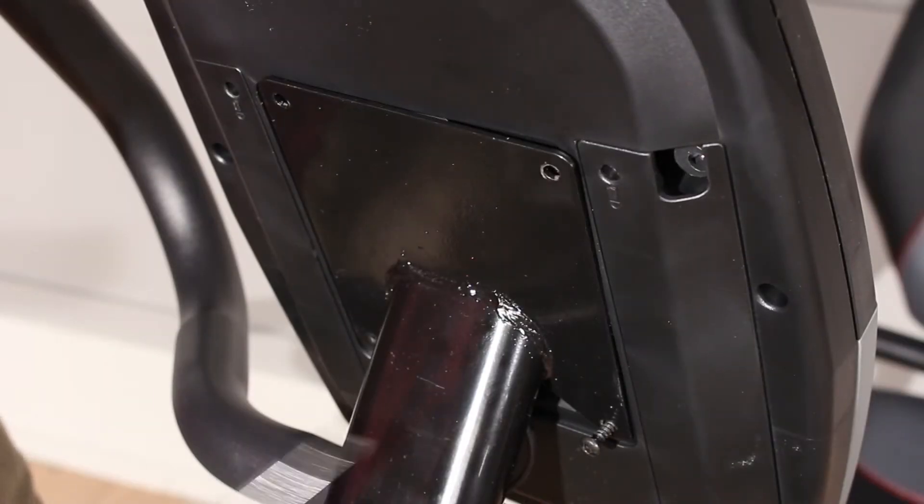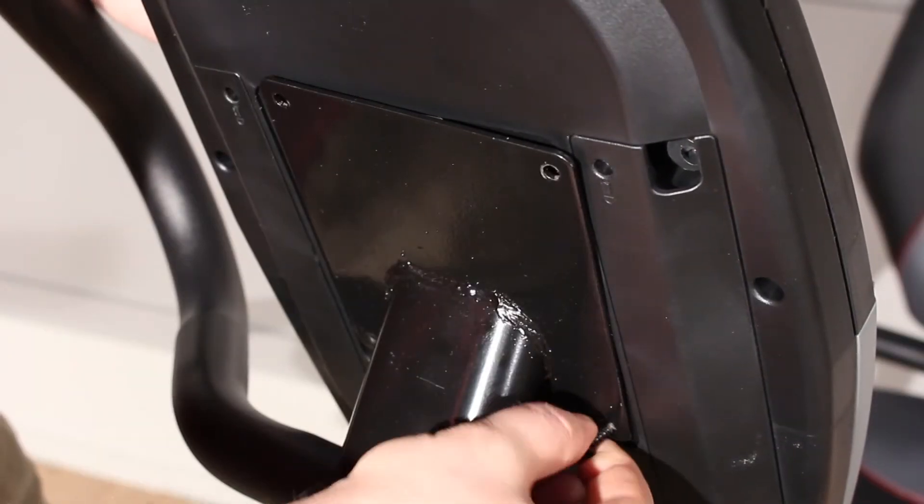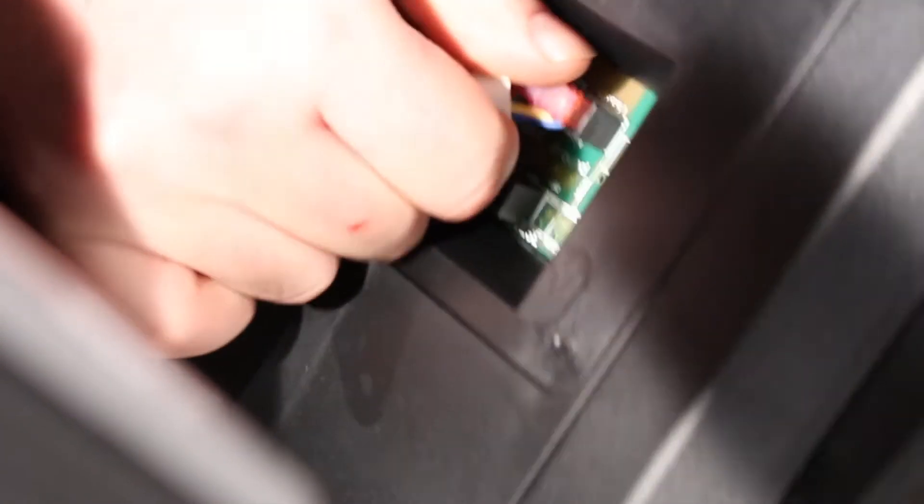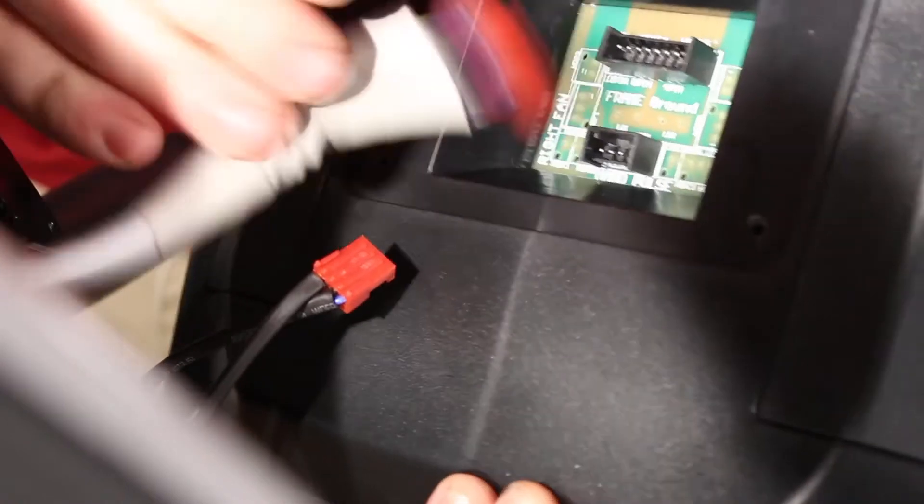Now remove the four screws that attach the console to the upright. Then, holding the console above the upright, disconnect the main wire and the pulse wire from the console.